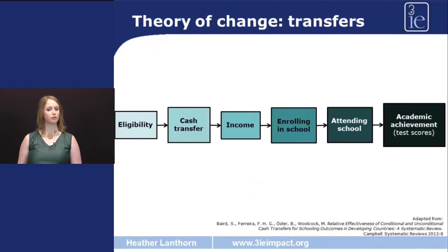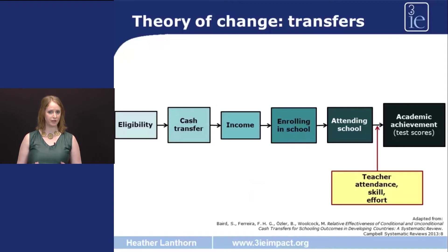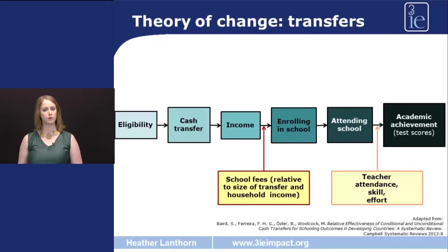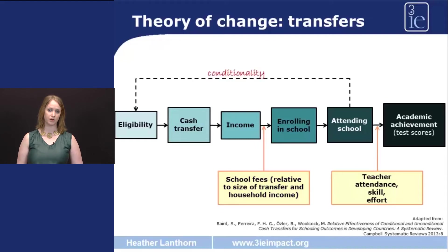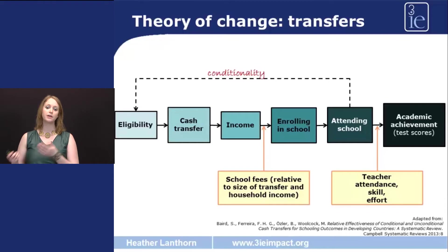For example, for children to attend school and have this translate into academic achievement, it depends whether the teachers themselves are present, whether they are adequately trained to give the instruction they're expected to give, and whether they put in the effort. Similarly, the link between income and actually enrolling in school will depend on the size of the transfer relative to the school fees, and therefore whether the transfer can cover the full cost. And remember that with conditional cash transfers, we add a feedback loop: if one of the conditions of receiving the transfer is having the child attend school, then attendance one month feeds back and affects eligibility in later time periods.